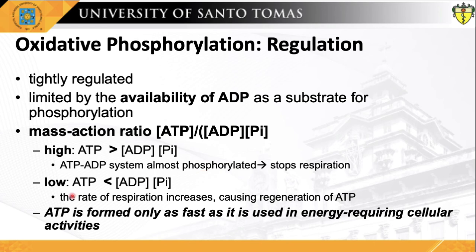When the rate of some energy-requiring process, like protein synthesis, increases, the rate of breakdown of ATP to ADP and inorganic phosphate increases, lowering the mass action ratio. With more ADP available for oxidative phosphorylation, the rate of respiration increases, causing regeneration of ATP. This continues until the mass action ratio returns to its normal high level, at which point respiration slows down again. In short, ATP is formed only as fast as it is used in energy-requiring cellular activities.